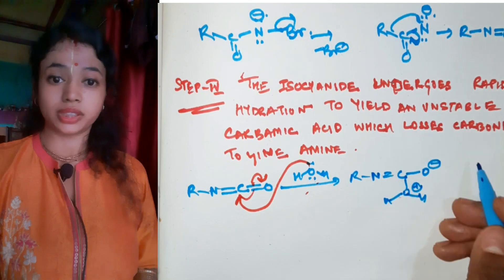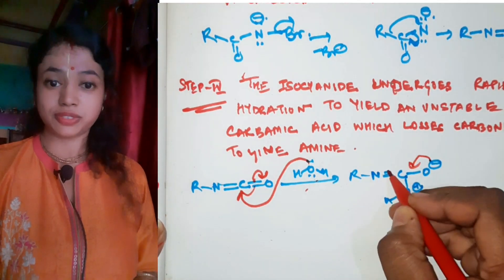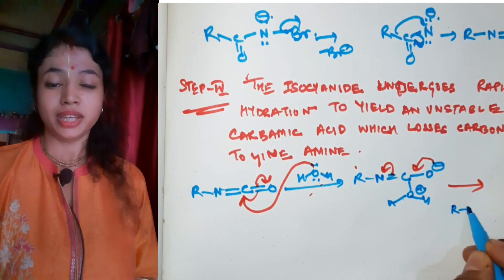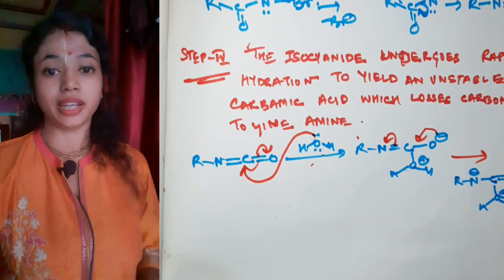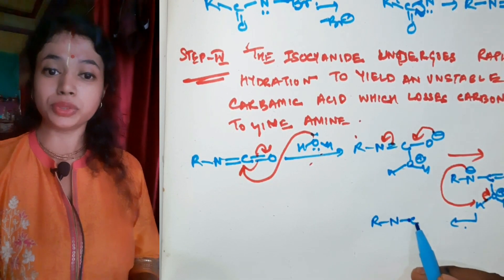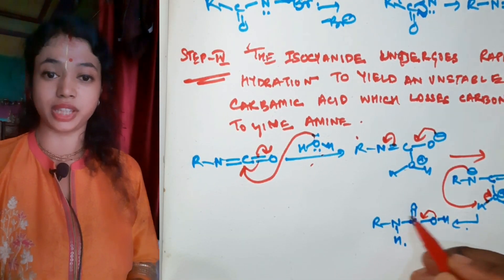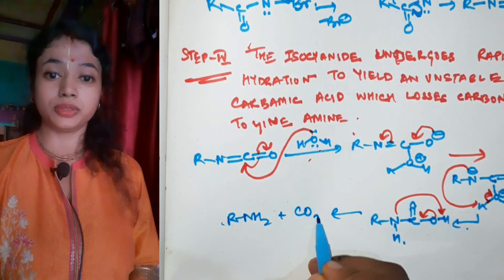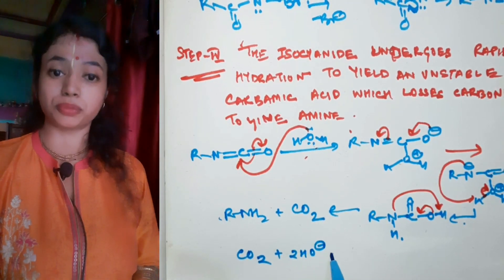The isocyanate undergoes rapid hydration: water attaches to the carbon atom of R-N=C=O, forming an unstable carbamic acid. The O⁻ shifts, nitrogen takes up a proton from water, and R-NH-C(=O)-OH (carbamic acid) is formed. This unstable carbamic acid then loses CO2, giving the final product R-NH2. The released CO2 reacts with the base to form sodium bicarbonate.